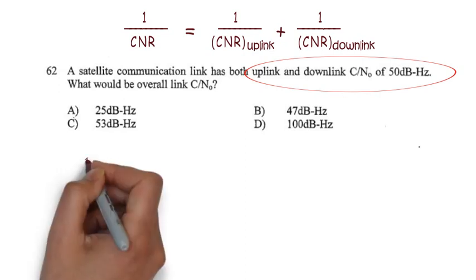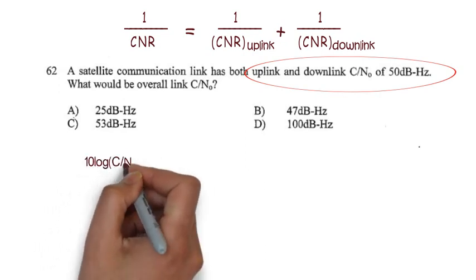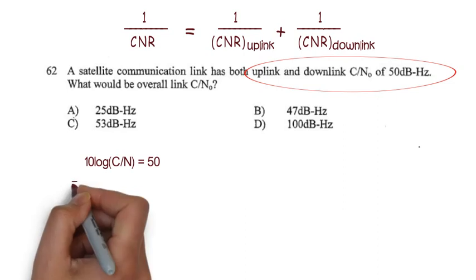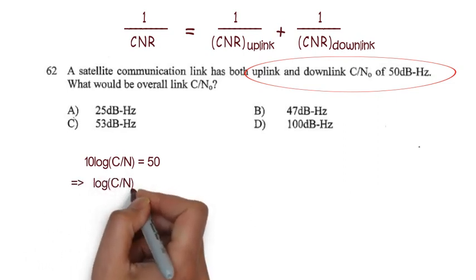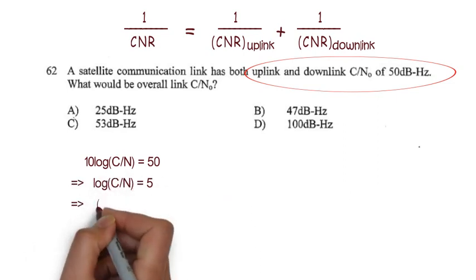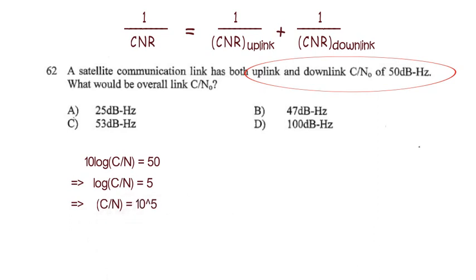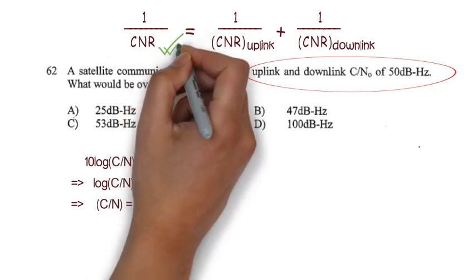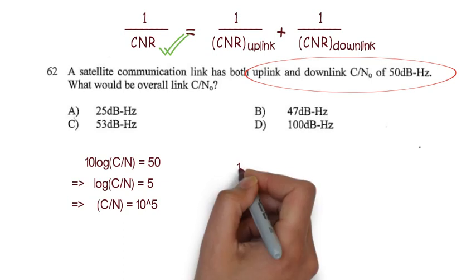So here it becomes 10 log C by N equal to 50, that will give log C by N equal to 5, so C divided by N will become 10 to the power 5. Now use the above formula to calculate the overall link budget.